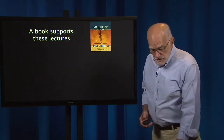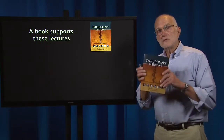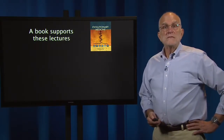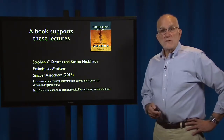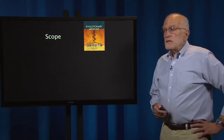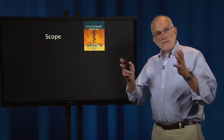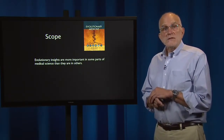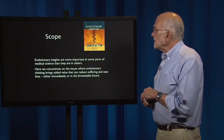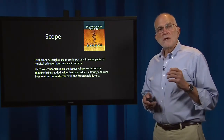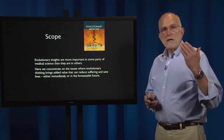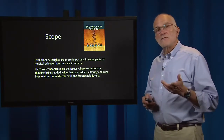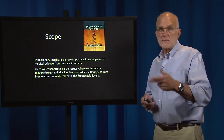The course is supported by a book which just was published a few days ago. It's co-authored with Ruslan Medjetov, and it's available from Sinauer Associates. The scope of the book actually defines the scope of the course. We concentrate on issues where evolutionary biology and evolutionary thinking brings insights that can reduce suffering and save lives, either immediately or as basic research continues.